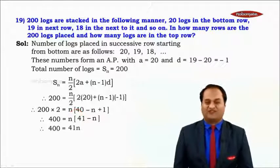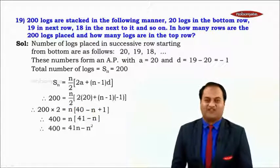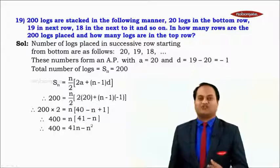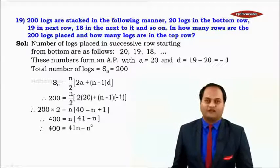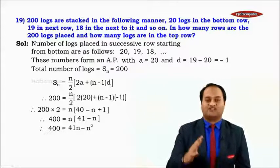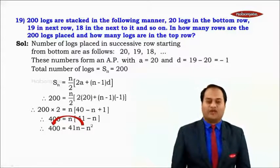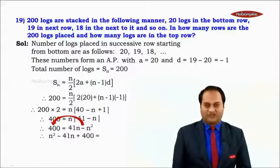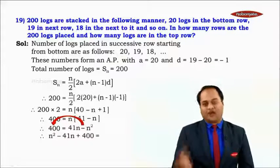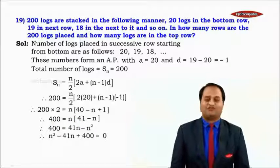Expanding the bracket: 400 = 41n − n². We are getting a quadratic equation. Rearranging all terms to one side: n² − 41n + 400 = 0.